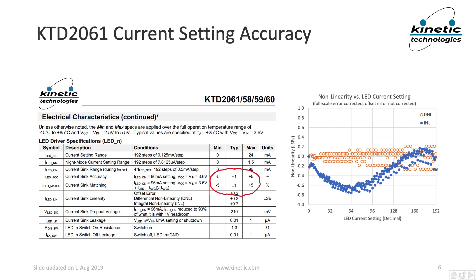Here on the left, you can see the section of our datasheet that specifies the electrical characteristics of the KTD2061's multiplexed LED driver output pins. The current sink accuracy and matching are typically trimmed to within plus and minus 1% at room temperature, but guaranteed to within plus and minus 5% over the full operating temperature range.